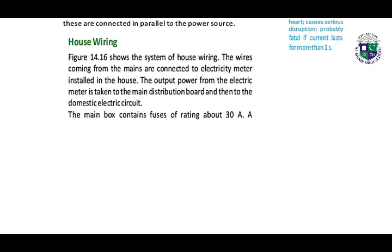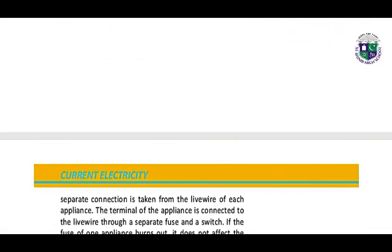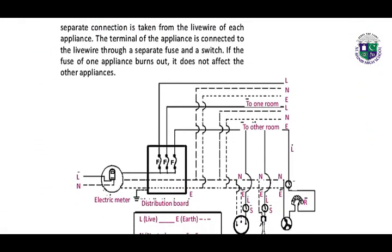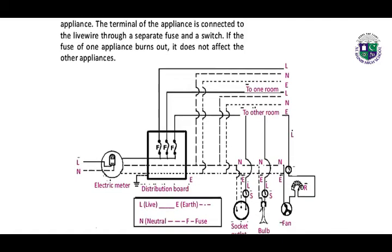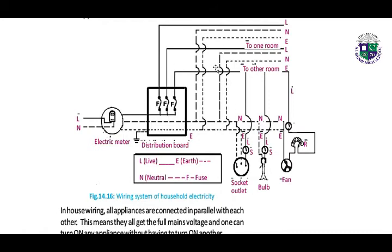House wiring: the wires coming from the mains are connected to the electricity meter installed in the house. The output power from the electric meter is taken to the main distribution board and then to the domestic electric circuit. The main box contains fuses of rating about 30 amperes. A separate connection is taken from the live wire to each appliance. The terminal of the appliance is connected to the live wire through a separate fuse and a switch. If the fuse of one appliance burns out, it does not affect the other appliances. Here we have the full wiring system of a household electricity supply.